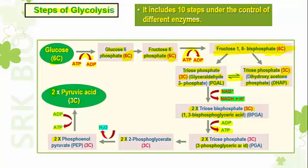Two molecules of 1,3-bisphosphoglycerate are converted into two molecules of 3-phosphoglycerate acid, generating 2 ATP molecules. Then 3-phosphoglycerate acid, also a 3-carbon compound, interchanges the phosphate group and becomes 2-phosphoglycerate. One molecule of water is removed from 2-phosphoglycerate and it is converted into phosphoenol pyruvate — PEP.